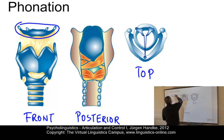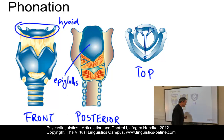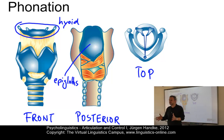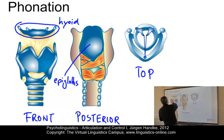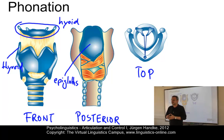The epiglottis — let's write down hyoid first of all. The epiglottis, that's this part here, can only be seen from behind. The epiglottis is attached to the anterior part of the thyroid cartilage and closes off the larynx during swallowing. In speech, it is involved in the production of some consonants.